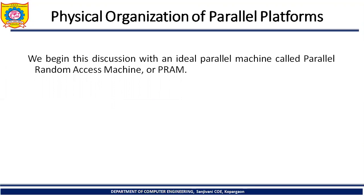We begin this discussion with an ideal parallel machine called Parallel Random Access Machine, that is PRAM. A question may come to mind: what is PRAM? Is it a different kind of machine? It is a different kind of architecture. PRAM is a platform that consists of how machines are interconnected with each other and running parallelly. It is not a supercomputer available somewhere — it is common machines organized parallelly. That is why it is called a Parallel Random Access Machine, or PRAM.